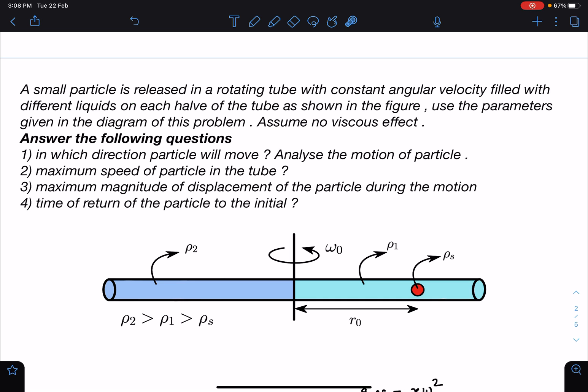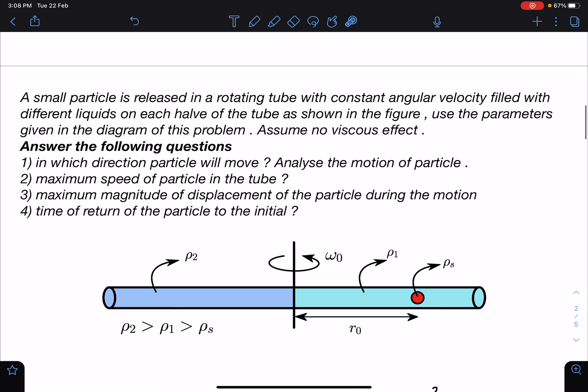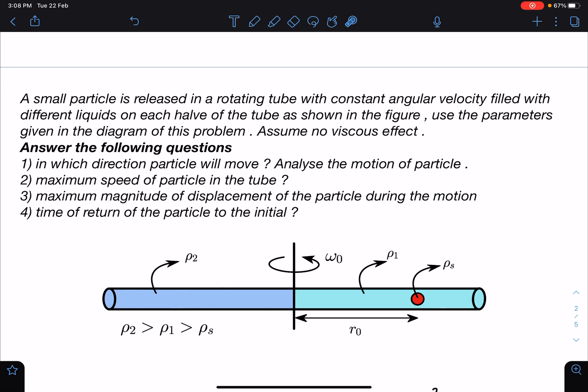Assume no viscous effect. We have to answer the following questions: in which direction the particle will move, analyze the motion of the particle, maximum speed of particle in the tube, maximum magnitude of displacement of particle during the motion, and time of return of particle to the initial point.